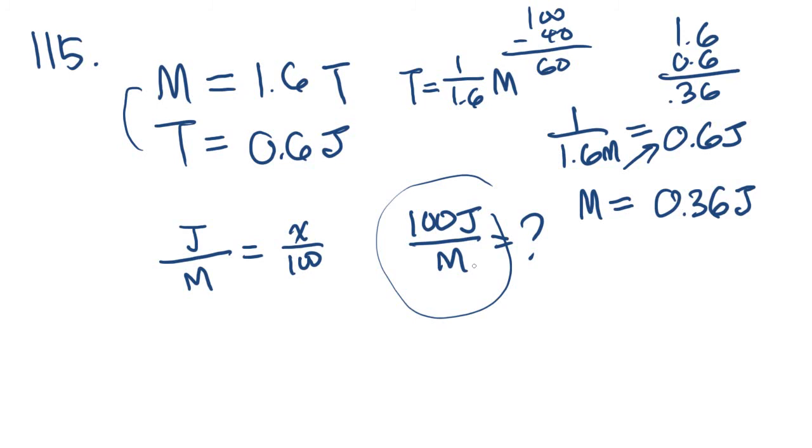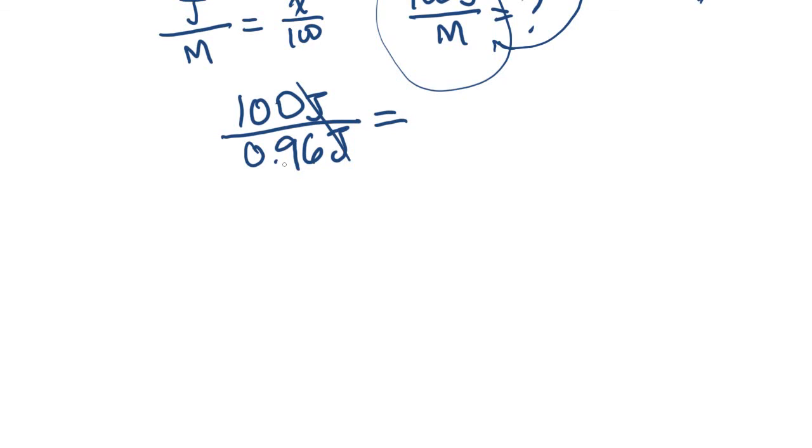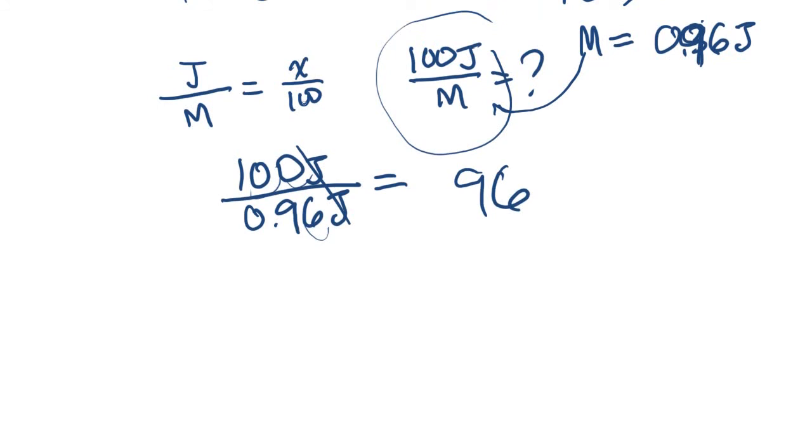Now let's plug the m into this equation that we're going to be solving for. 100j over 0.96j equals - cancel out the j's - and we are going to get 96. Because of the way that we move the decimal over. And remember that originally we are solving for a percentage, and it would be 96 over 100, right? So that's why it's 96%. 96% is answer choice C.